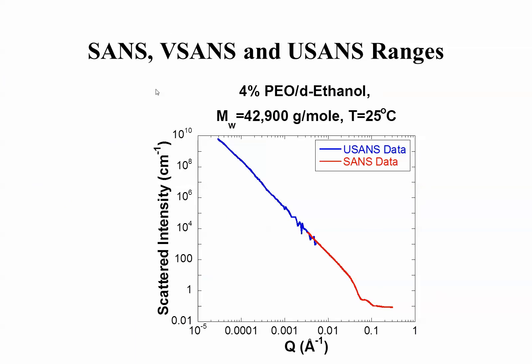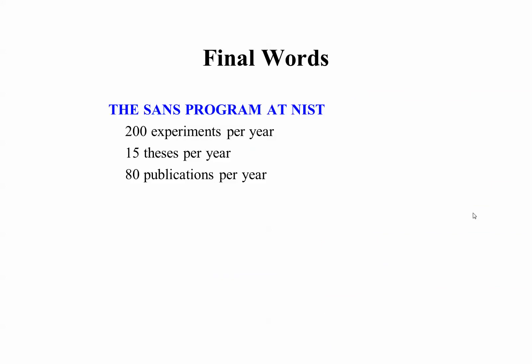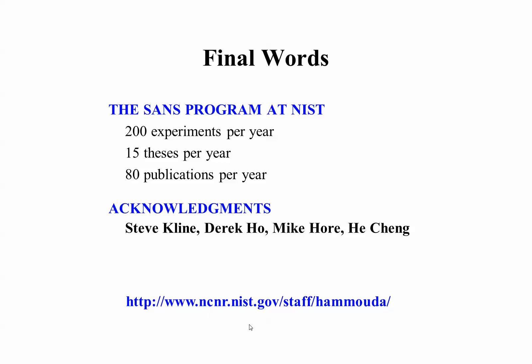As far as SANS-U-SANS, here I'm showing the U-SANS spectrum on PEO and ethanol. This is U-SANS and then the V-SANS will overlap between the two. The SANS program at NIST involves some 200 experiments per year, resulting in something like 15 theses, 80 publications. Team members include Steve Kline, Derek Hoag, Mike Hoar, and Hui Yang. And check out this website. There's a lot of interesting stuff in it, including a tutorial and lots of interesting references. Thank you.